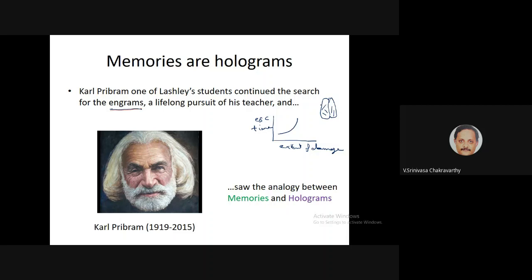He concluded that memory is all over the brain and not localized to one part. Localization of function in the brain had been considered very important — there is a visual area in the occipital lobe, a sensory area in the post-central gyrus, and so on. But no such localization was found for memory. These experiments were a bit crude, but this was Lashley's conclusion.